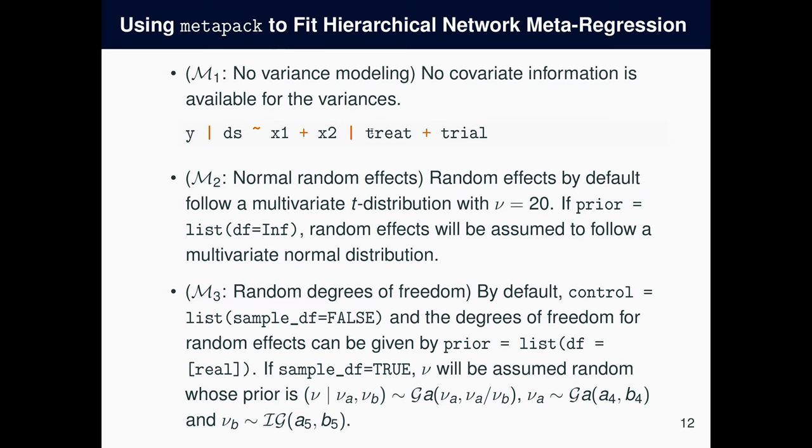The second and the third options are about the random effects. Random effects by default follow a multivariate t-distribution, but you can assume multivariate normal distribution by setting this df in prior and set it to infinity. Also, you can directly specify the degrees of freedom for the t-distribution for the random effects, but if you'd like to pursue a more data-driven route, you can also set the sample_df variable in the control parameter as true. Usually, this is by default false, but if you set this to true, then this df variable in prior will be ignored, and the MCMC algorithm will start sampling nu. And this is the prior distribution as shown.